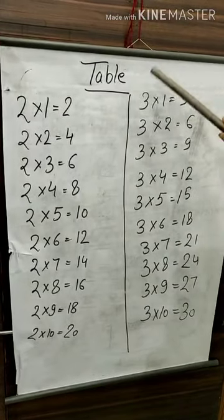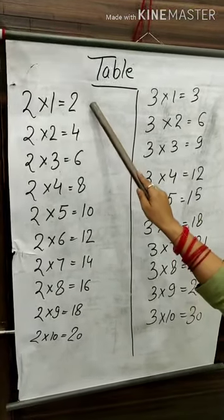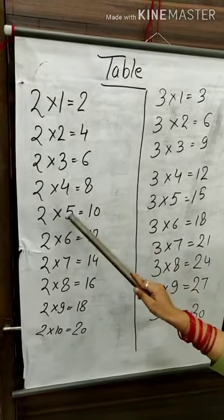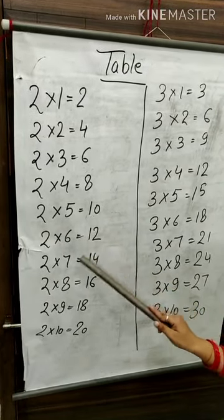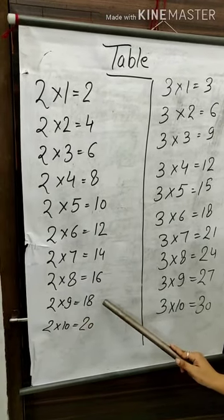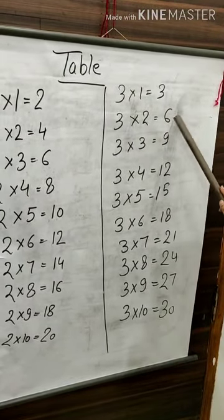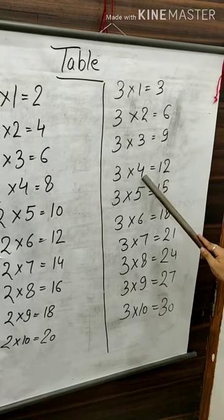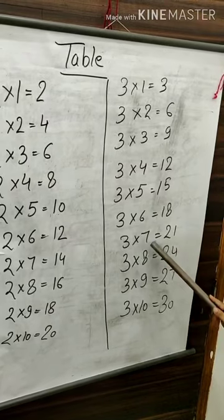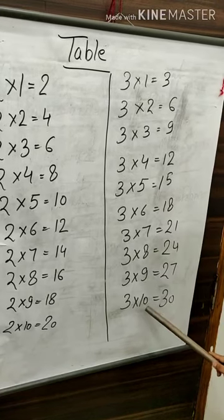My next topic is tables of two and three. Two ones are two. Two twos are four. Two threes are six. Two fours are eight. Two fives are ten. Two sixes are twelve. Two sevens are fourteen. Two eights are sixteen. Two nines are eighteen. Two tens are twenty. Three ones are three. Three twos are six. Three threes are nine. Three fours are twelve. Three fives are fifteen. Three sixes are eighteen. Three sevens are twenty-one. Three eights are twenty-four. Three nines are twenty-seven. Three tens are thirty.